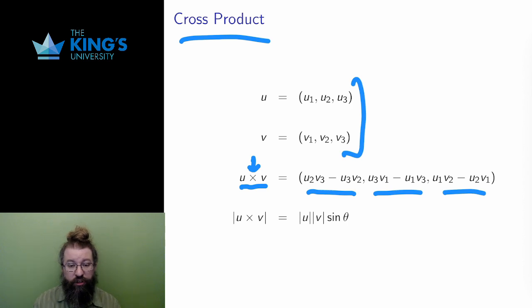The dot product measured, in some sense, the similarity between two vectors. It was large when the vectors pointed in the same direction. The cross product, in some sense, measures the difference. It is largest when the vectors point in different directions. It has a similar relationship to angle as the cross product, but with the sine instead of the cosine, as shown here.